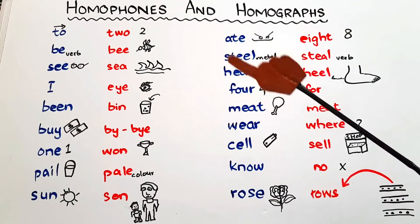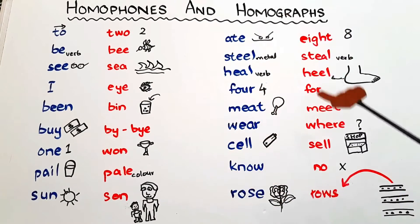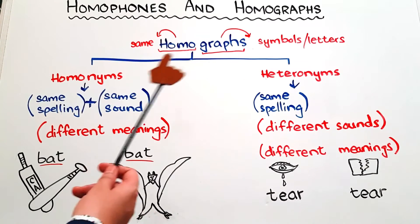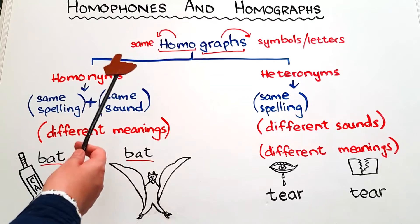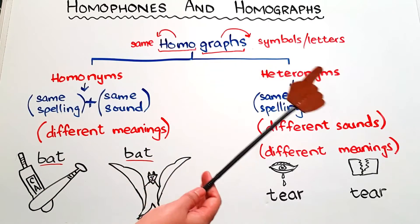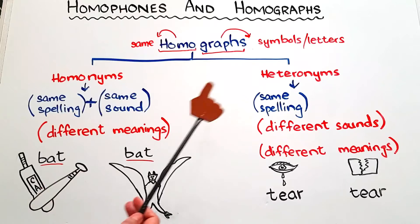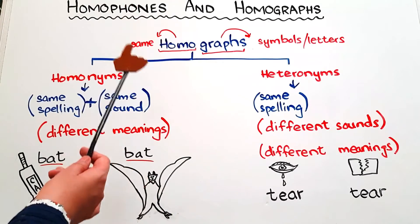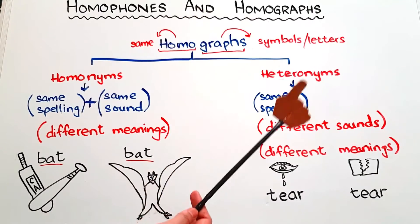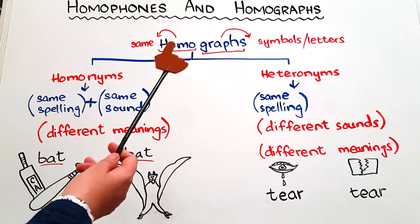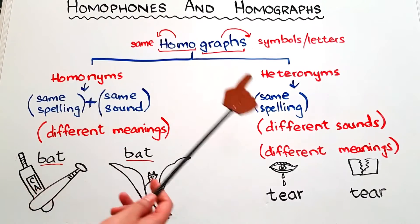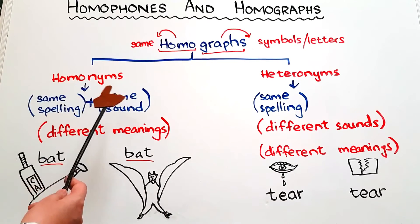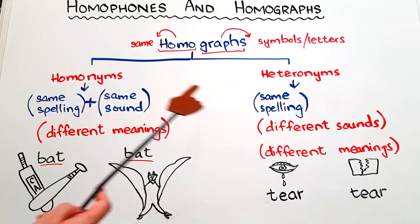Now let's find out what homographs are. 'Homo' means same and 'graph' means symbols or letters. So homographs are words that have the same spellings but homographs have two types: the first is homonyms and the second is heteronyms.